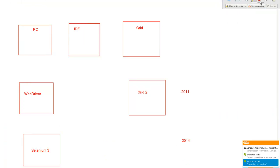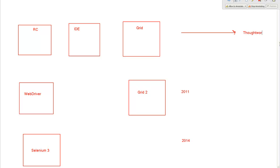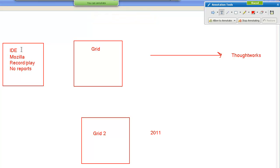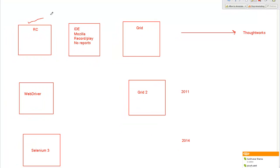RC, IDE, and Grid were the initial components. Selenium was initially made by a company known as ThoughtWorks for its own testing purpose. IDE was the initial one which everybody started using because it was very easy to use - it installed as an addon in Mozilla. The only problem is that it only works on Mozilla; it is only a record-and-play tool with no reports generated. For websites that need to be tested on multiple browsers like IE, Mozilla, Chrome, and Safari, we had RC.